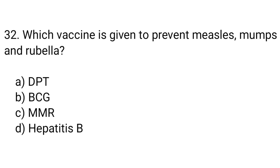Question 32. Which vaccine is given to prevent measles, mumps, and rubella? The right answer is option C: MMR.